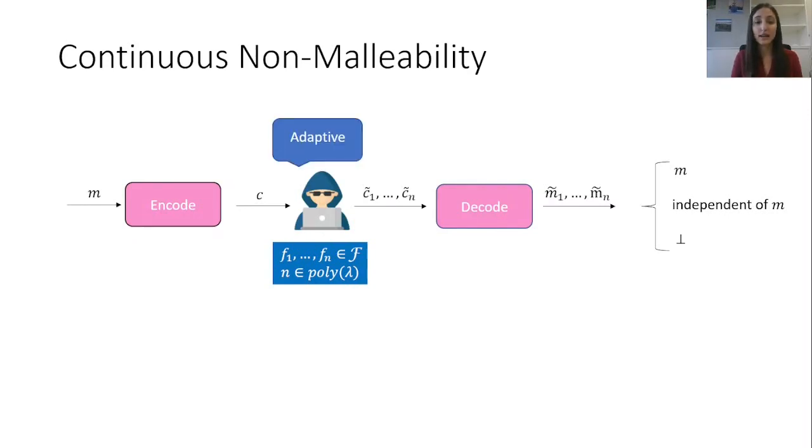This selection can be done adaptively based on the outcome of previous tampering attempts. Here we assume the experiment performs a self-destruction mechanism, meaning that as soon as tampering is detected once, all following tampering attempts will be answered with ⊥, independent of the actual outcome.